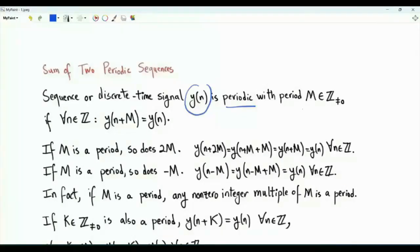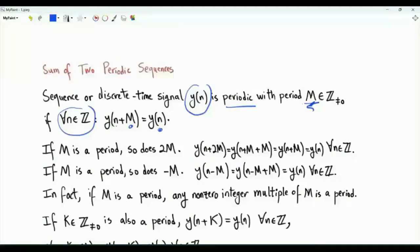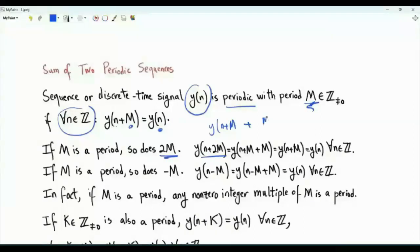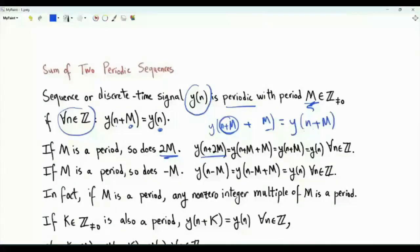A discrete-time signal y(n) is periodic with period M, which is a non-zero integer, if for every integer n, y(n + M) is equal to y(n).